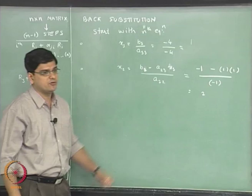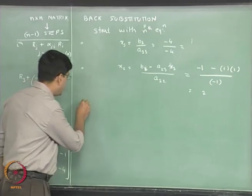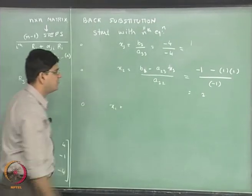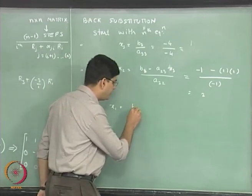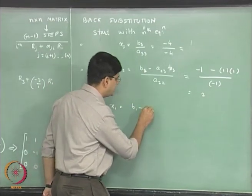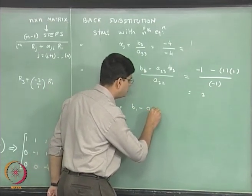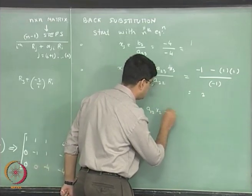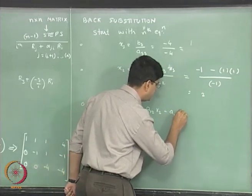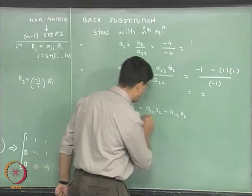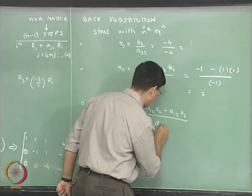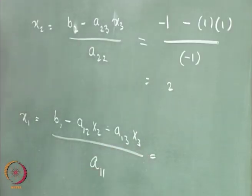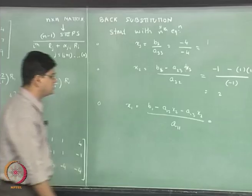So we get x_2 equal to 2 in the second step. And in the third step we get x_1 equal to b_1 minus a_12 x_2 minus a_13 x_3, divided by a_11.